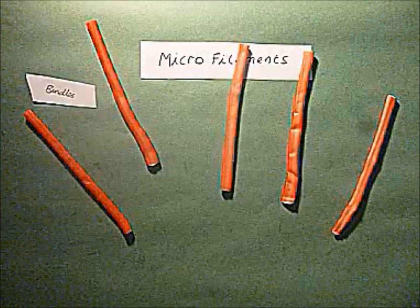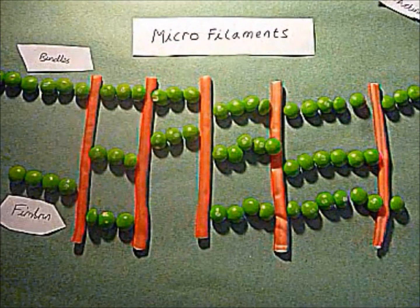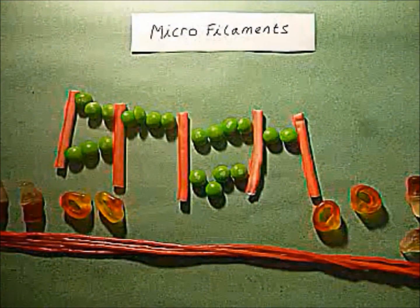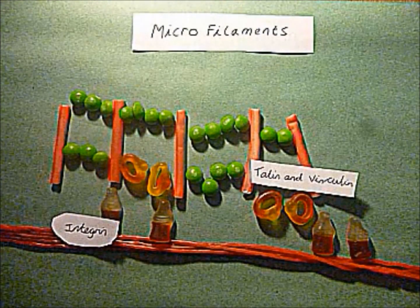Actin filaments can form many different shapes to form bundles and networks. Bundles arranged in parallel support projections like microvilli, with the addition of the proteins integrin, talin, vinculin, and alpha-actinin connecting filaments.